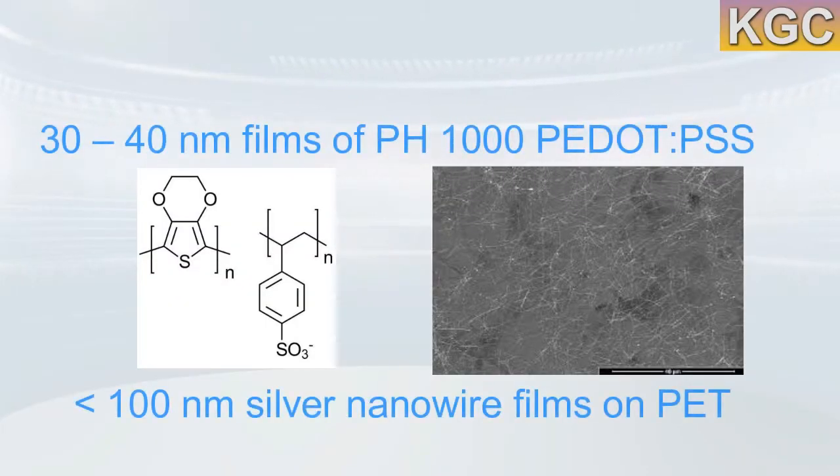For example, 30 to 40 nanometer films of polystyrene sulfonate or less than 100 nanometer silver nanowire films on PETR are nanometer scale devices which resistance should be measured for further electrical tests.